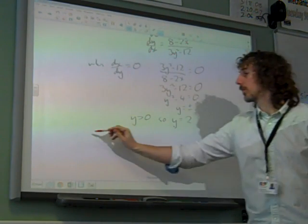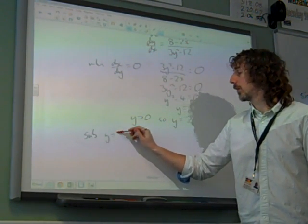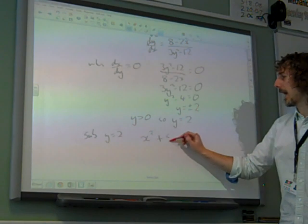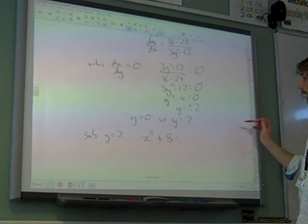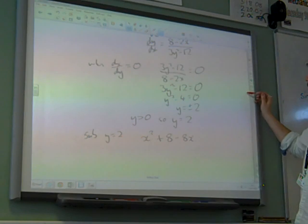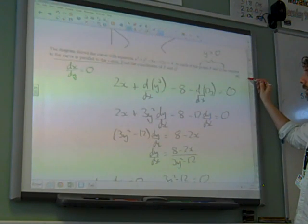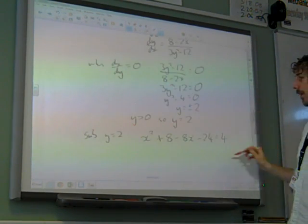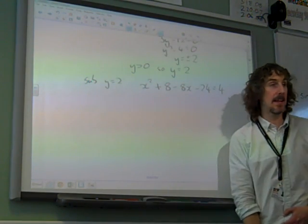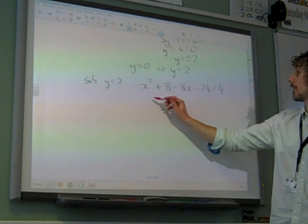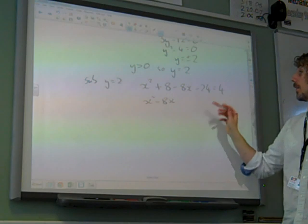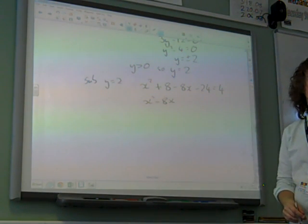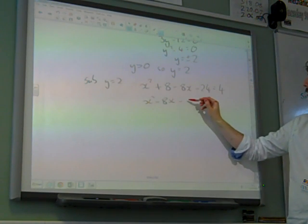So we're going to have to sub this y equals 2 back into our original equation. So if we sub it back in, we get x squared plus, was it y cubed? So 8 minus 8x. Was it minus 12y? Yeah. Equals 4, I think we had. So we've now got a quadratic in x to solve, which gives us x squared minus 8x. Bring everything on to one side, of course. Minus, what is it, minus 12?